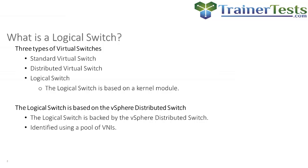Our logical switches will not use VLANs. So prior to creating a logical switch, you'll establish a pool of what are called VXLAN network identifiers, or VNIs. Our VNIs are going to start at 5000 — that way they're easy to distinguish from VLANs. Each VNI serves as a logical identifier for a logical switch.